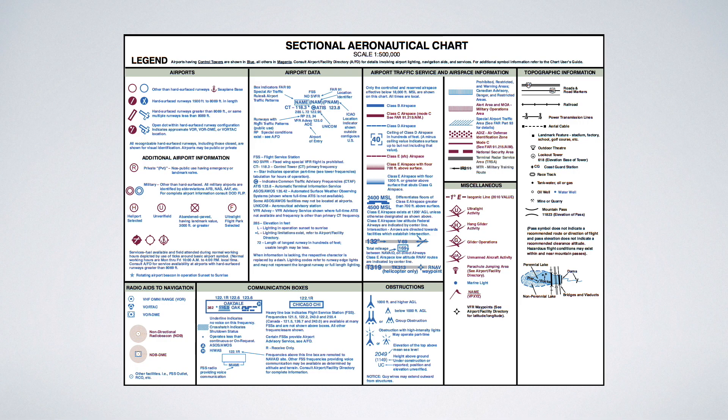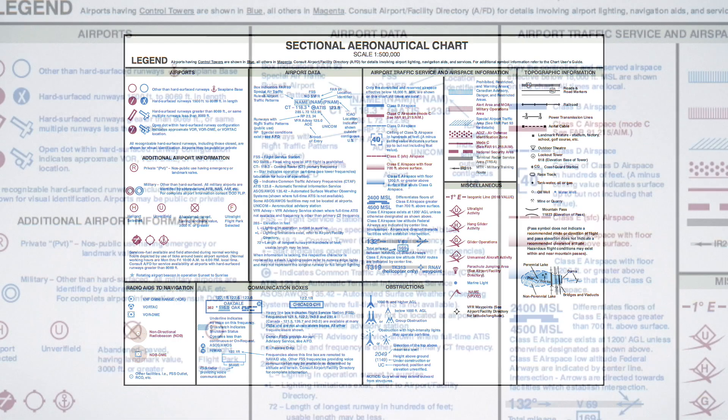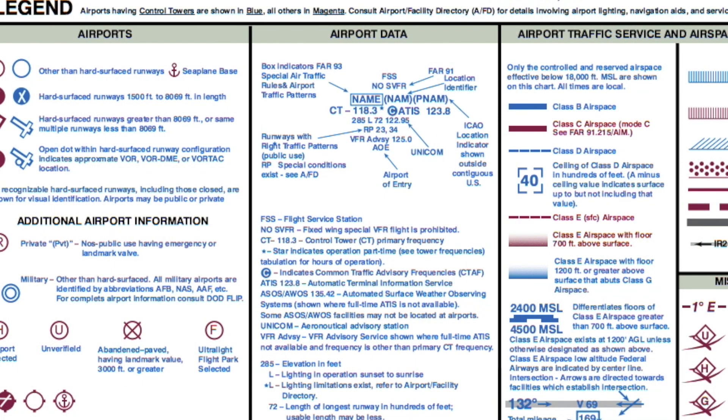Let's go to the sectional legend. Here we're focusing on the section of the legend that says Airport Data — it's up at the top, sort of in the middle left. You should notice that the block of text at the top looks similar to the one we're focusing on for the Statesboro Airport in our question. If you look at the legend, you'll see that this example provides three radio frequencies, while the Statesboro Airport only shows two radio frequencies.